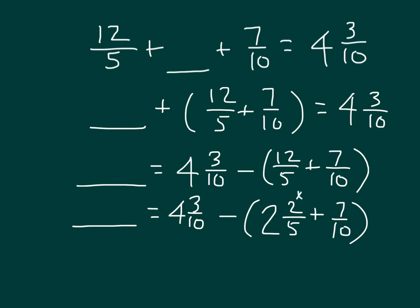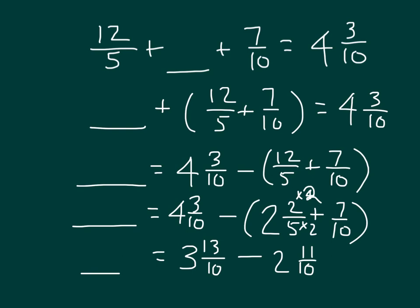12 fifths — 5 goes into 12 two whole times with a remainder of 2, so 12 fifths is 2 and 2 fifths as a mixed number. Adding that with 7 tenths: 2 fifths times 2 over 2 gives 4 tenths, plus 7 tenths is 11 tenths. So we have 2 and 11 tenths subtracted from 4 and 3 tenths. Regrouping 4 and 3 tenths as 3 and 13 tenths: 13 tenths minus 11 tenths is 2 tenths, and 3 minus 2 is 1. So the value that goes in the blank is 1 and 2 tenths.